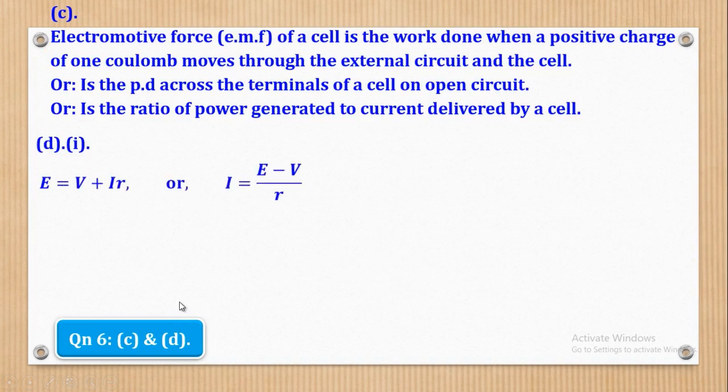So first of all, we know that EMF of the cell will be equal to PD across the external circuit plus the PD due to the internal resistance, which is E is equal to V plus IR. So you can either write it like this, or you choose to make I the subject. So when I make I the subject, it means this one goes this side to come up with I equals E minus V over R. So either of the two is OK.